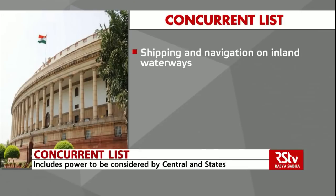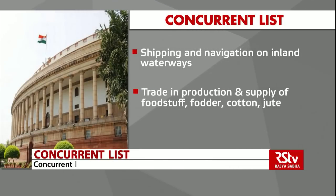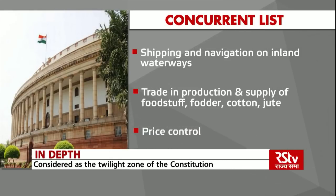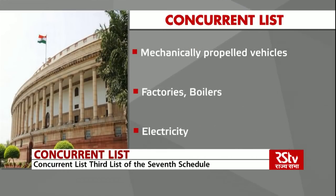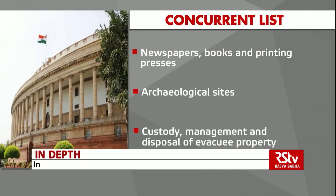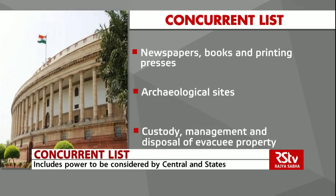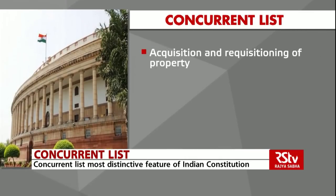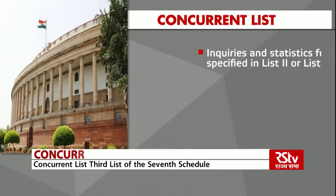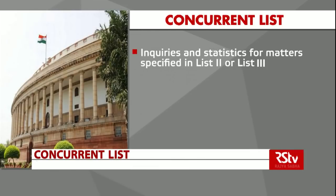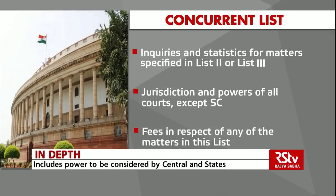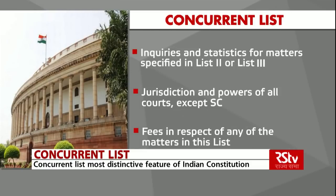Major ports. Shipping and navigation on inland waterways. Trade and commerce in production, supply and distribution of foodstuffs, cattle fodder, raw cotton, raw jute. Price control. Mechanically propelled vehicles. Factories, boilers, electricity, newspapers, books and printing presses. Archaeological sites. Custody, management and disposal of property declared by law to be evacuee property. Acquisition and requisitioning of property. Recovery in a state of claims in respect of taxes. Stamp duties. Inquiries and statistics for the purposes of any of the matters specified in List 2 or List 3. Jurisdiction and powers of all courts except the Supreme Court. Fees in respect of any of the matters in List 3.